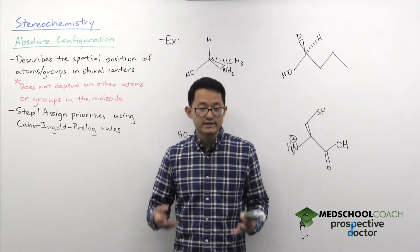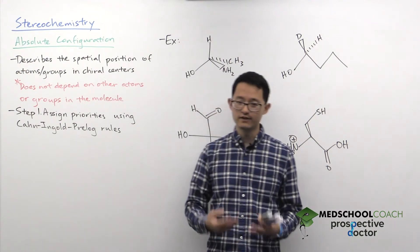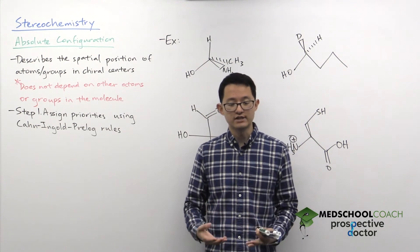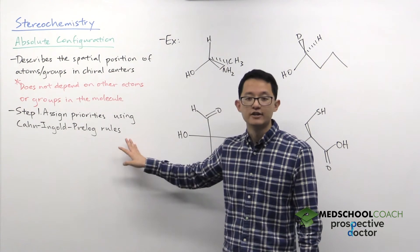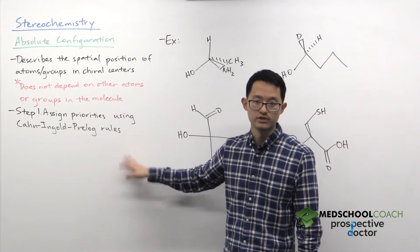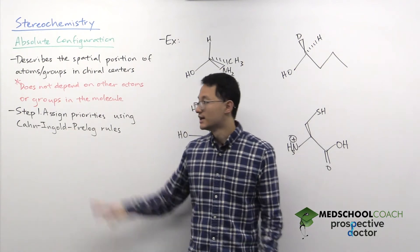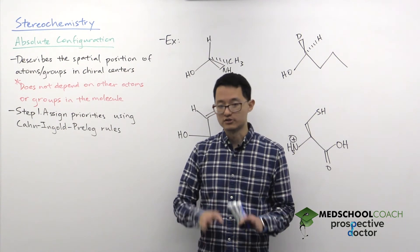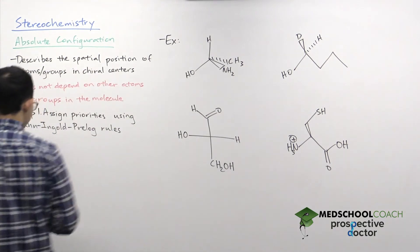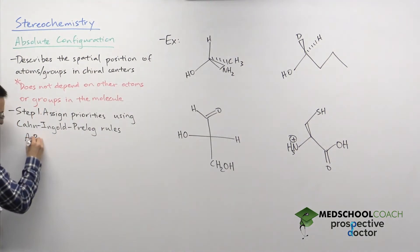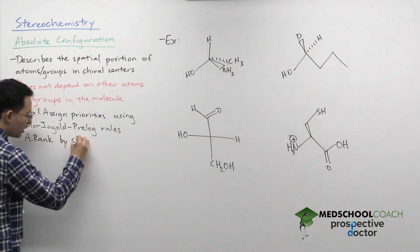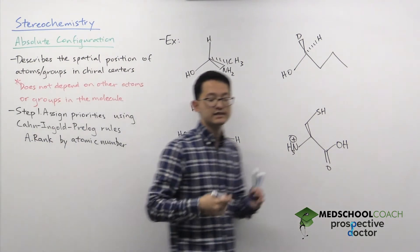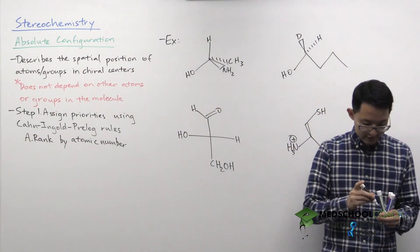So how do we assign R or S? The first thing you want to do is take a look at the four different substituents on your chiral center and assign priorities using the Cahn-Ingold-Prelog rules. You want to be very careful here because these steps are very important to follow in order to get the correct absolute configuration. The first step is to rank your four substituents by atomic number, which is the number of protons in your atom.